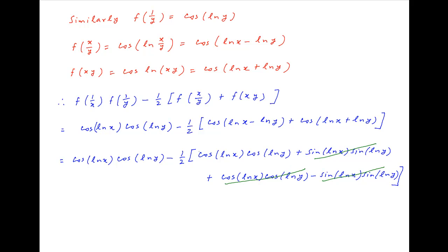In the square brackets, the second and fourth terms cancel, and the first and third terms are equal. Therefore, the whole expression simplifies to cos(ln x)cos(ln y) - cos(ln x)cos(ln y) = 0.